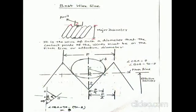Best wire size is the wire of such a diameter that contact points of the wire must be on the pitch line or effective diameter.